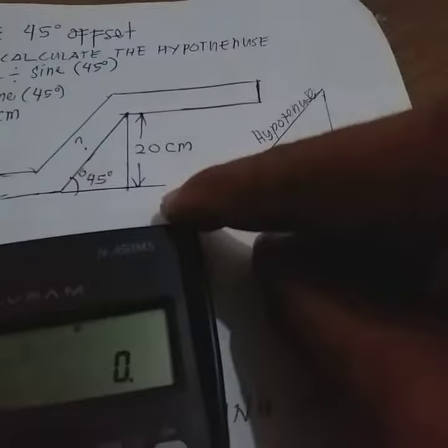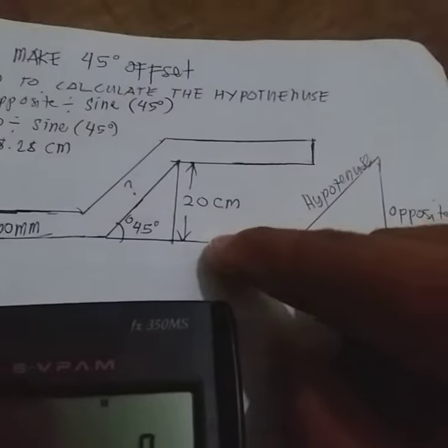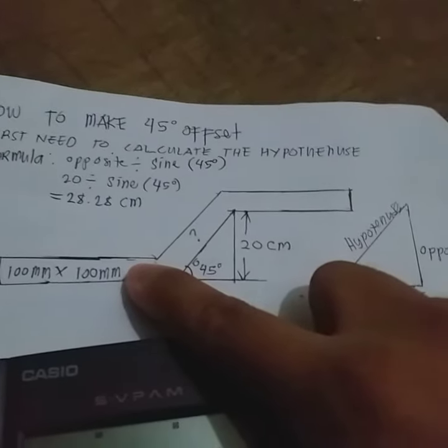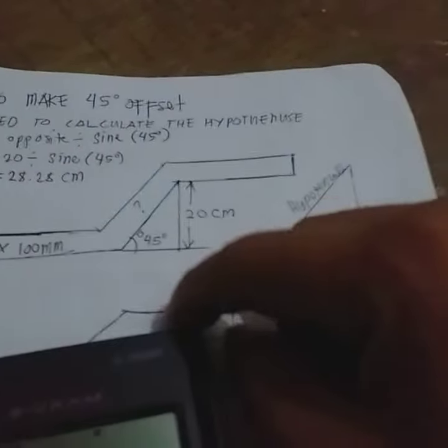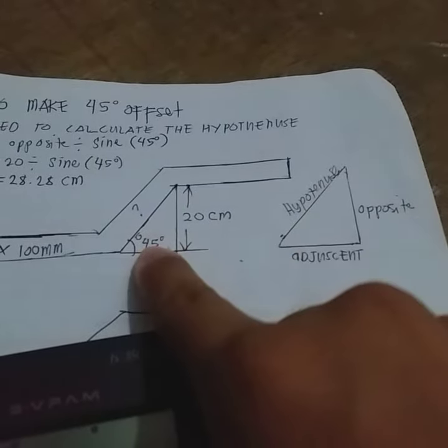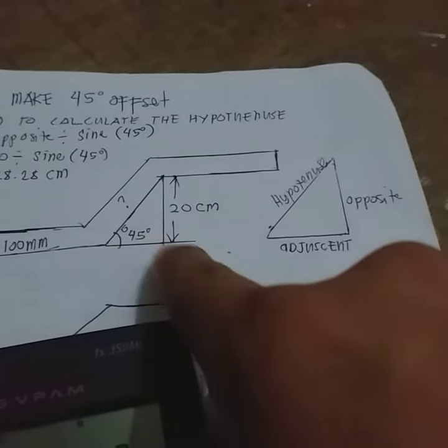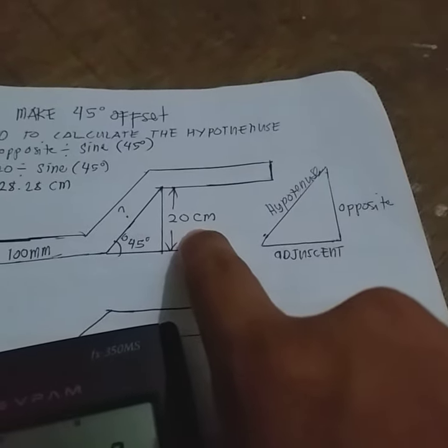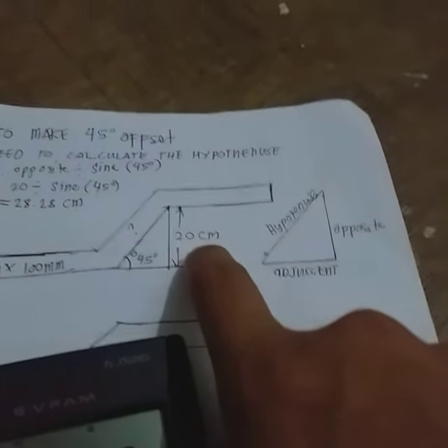And if we will apply to the cable tray, assume that this cable tray is 100 mm by 100 mm in size and we need to bend 45 degrees. Let's assume that this opposite is 20 centimeter, the height of the bend we want to make.